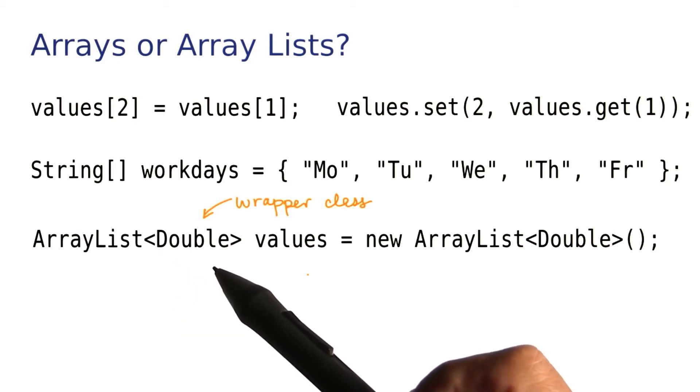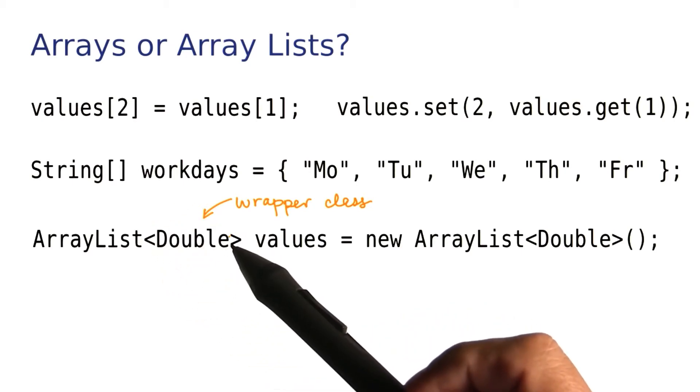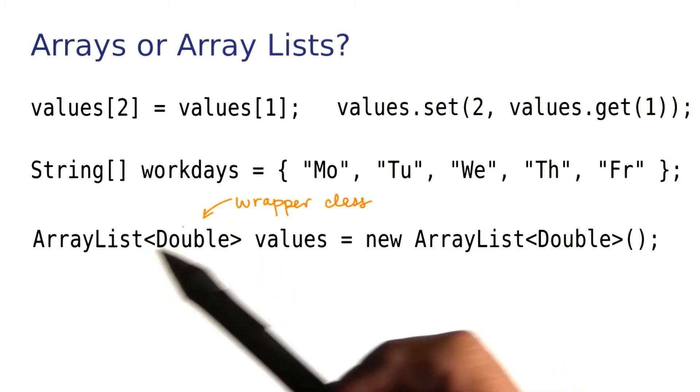Normally, when we want to have a floating point number, we write double with a lowercase D, and you may recall that the number types are not classes in Java. But inside the angle brackets here, I must put in a class. An ArrayList can only collect objects of a class.